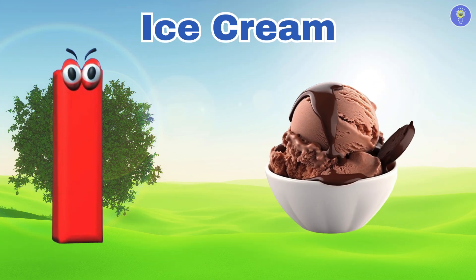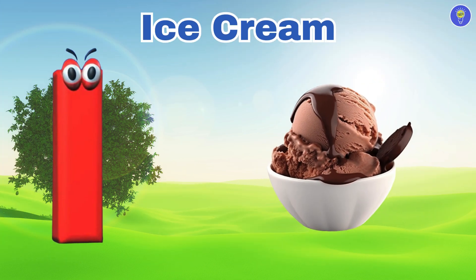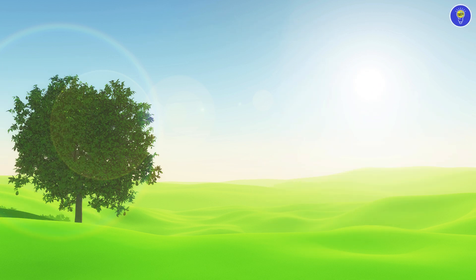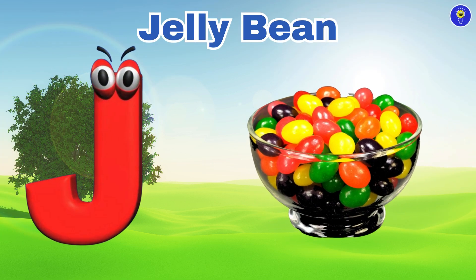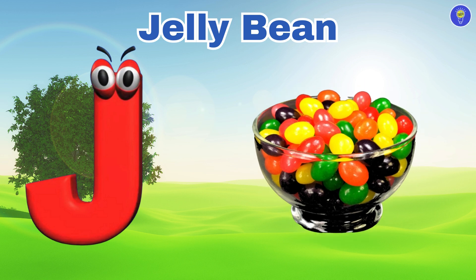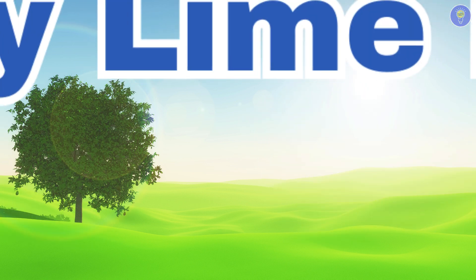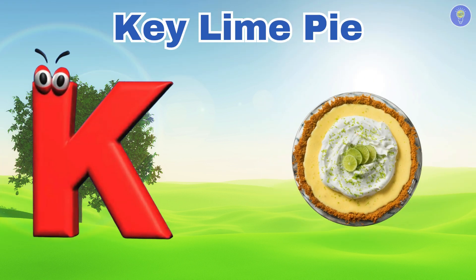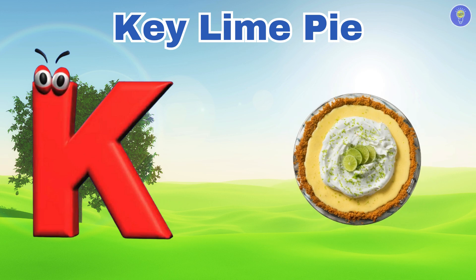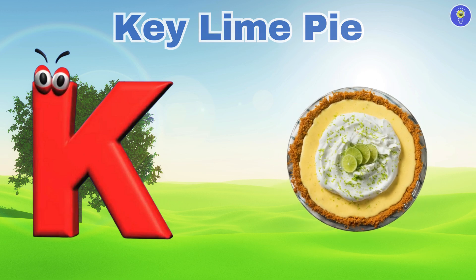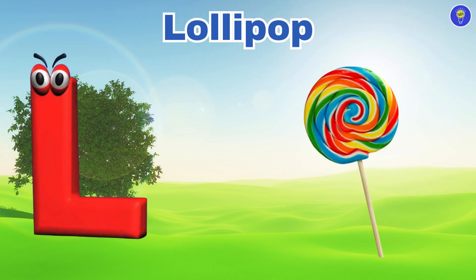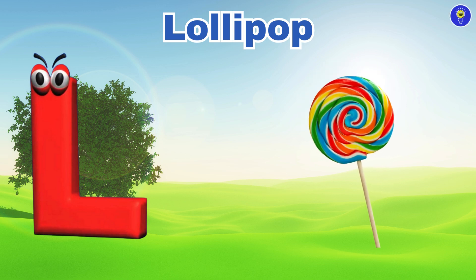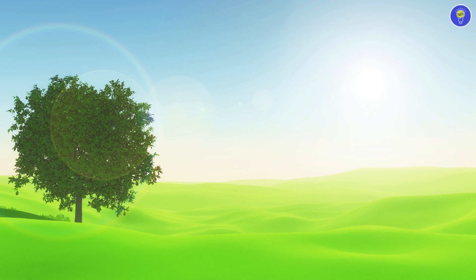I is for Ice Cream. I. Ice Cream. J is for Jelly Bean. J. Jelly Bean. K is for Key Lime Pie. K. Key Lime Pie. L is for Lollipop. L. Lollipop.